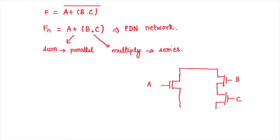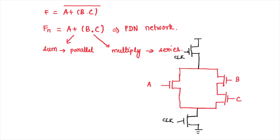We extend the line to connect the paths in parallel. We then add the pre-charge transistor (PMOS) and evaluation transistor (NMOS). The NMOS evaluation transistor is grounded, and the PMOS source is connected to VDD. The output is taken at the node where f = (a + b·c)̄, and a load capacitor CL is connected here. Since it is a dynamic CMOS design, all outputs are stored in this output capacitance CL.